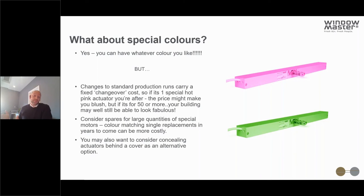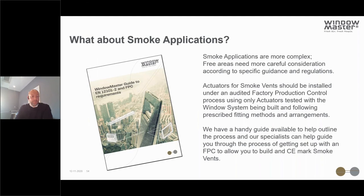Concealing actuators behind a cover profile is often a very cost-effective alternative to colour matching. For smoke applications, free areas need more careful consideration according to specific guidance and regulations. Actuators used in smoke applications must be installed under an audited factory production control process, using only actuators and components that have been jointly tested following prescribed fitting methods. We have a handy guide on our website and a specialist in-house who can guide you through setting up an FPC to allow you to build and CE mark smoke vents.